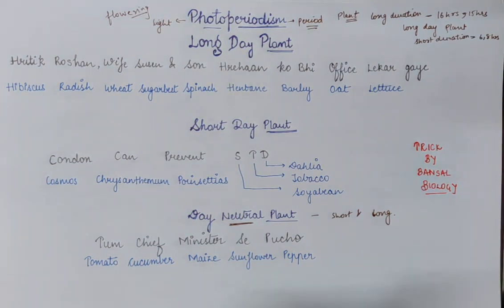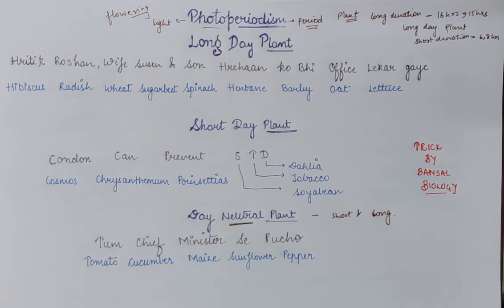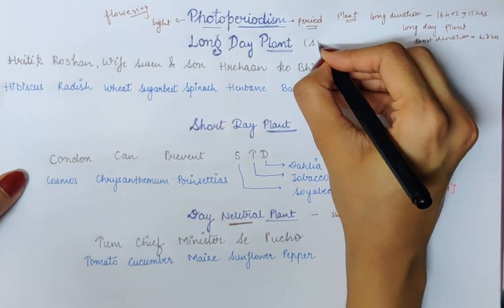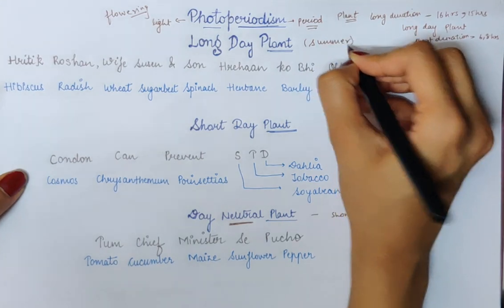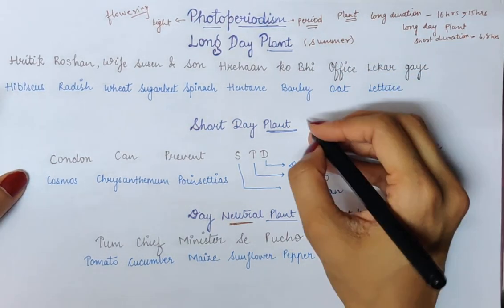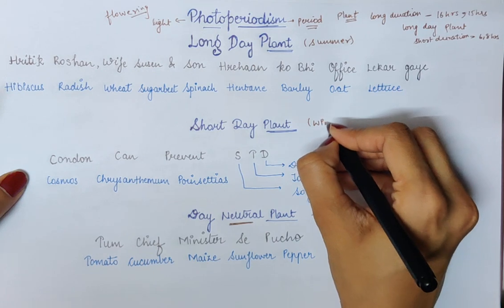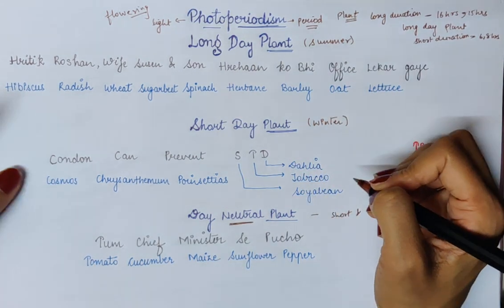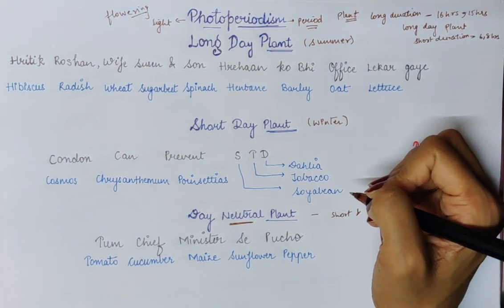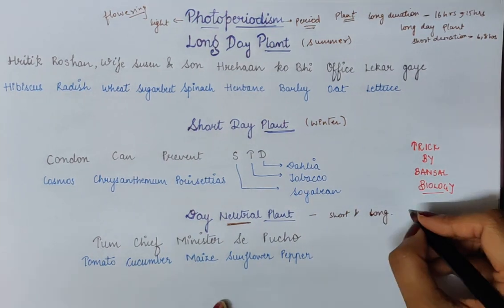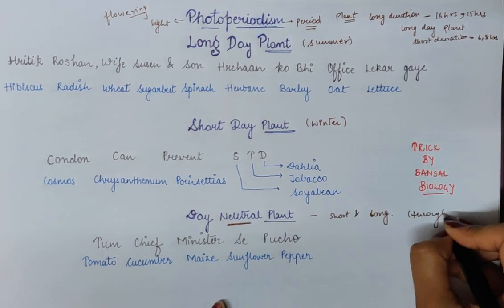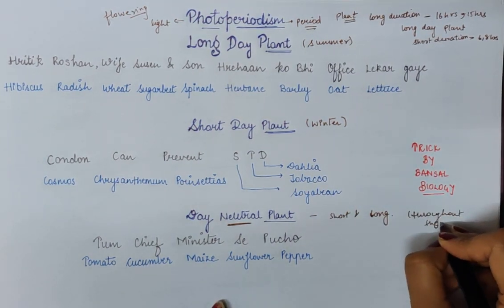Long day means more period of light. Short day means less period of light. And day neutral means we can provide light for any number of hours. Long day plants are basically grown during the summer period because in summers the day is very long. Short day plants grow during the winter season as the light period is less. And day neutral plants grow throughout the year.